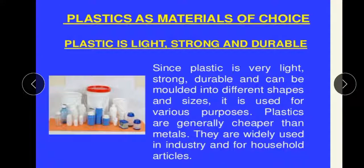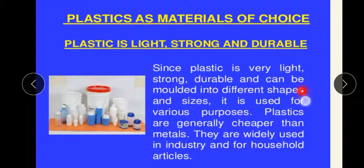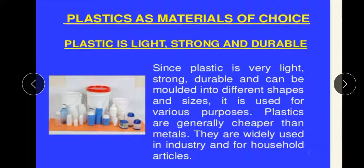Another advantage that attracts us to plastic is that it is light, strong, and durable. Since plastic is very light, strong, durable, and can be molded into different shapes and sizes, it is used for various purposes. Plastics are generally cheaper than metals and are widely used in industries and for household articles. We can find easily that 30–40% of our household articles — like chairs, buckets, mugs, and many other things — are made of plastic.